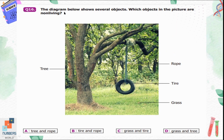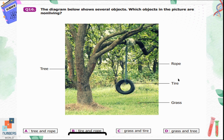Question number sixteen: the diagram below shows several objects. Which objects in the picture are non-living — tree, rope, tire, or grass? We know plants are living things, so tree and grass are living things. Tire and rope are non-living. So option B, tire and rope, is the correct option.